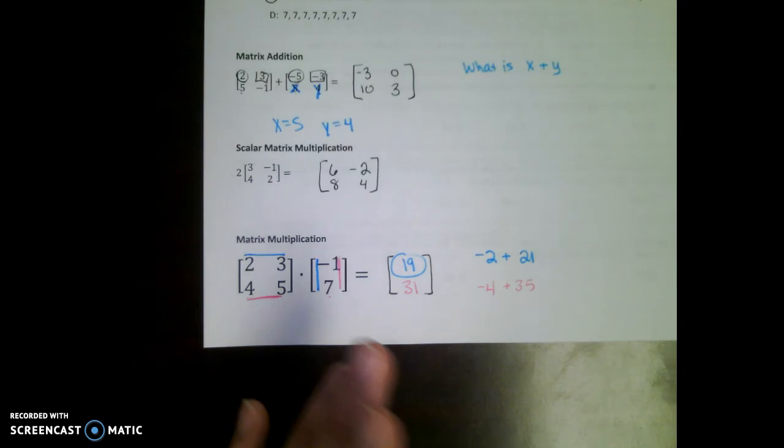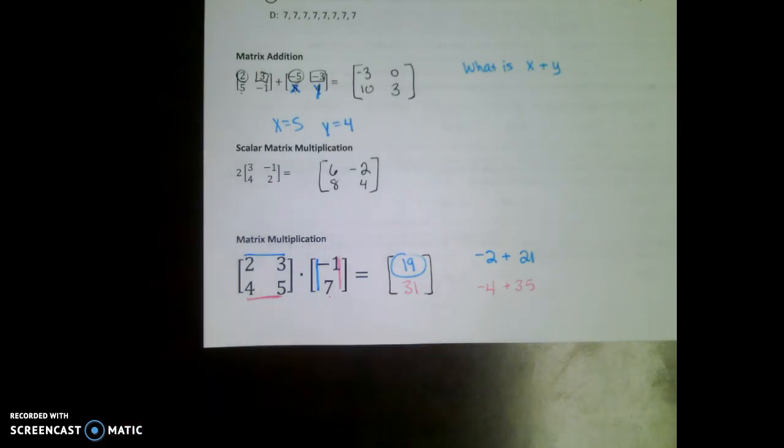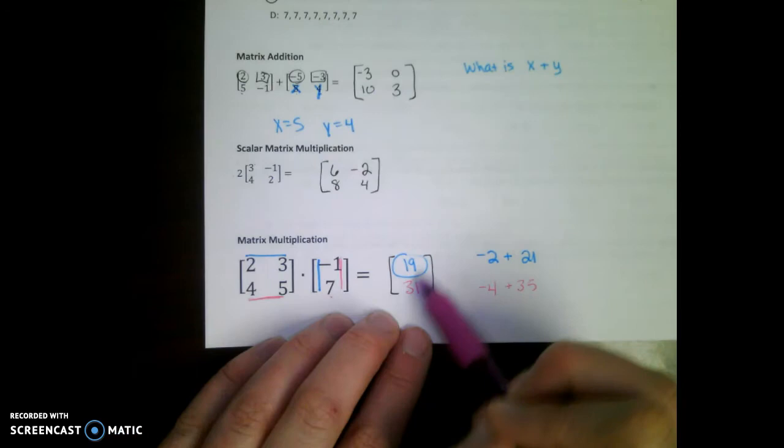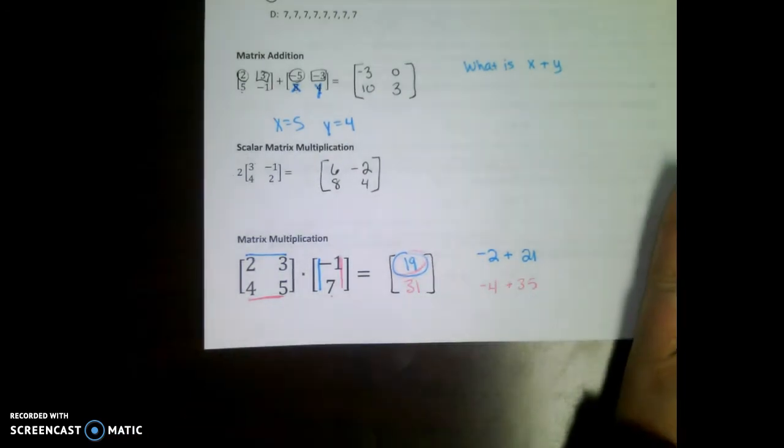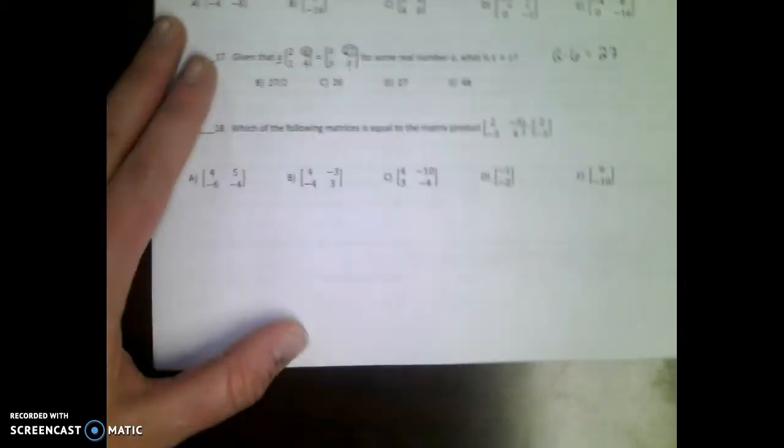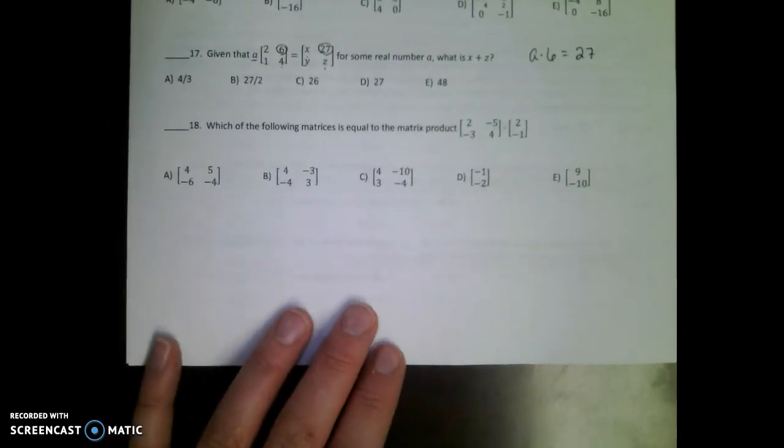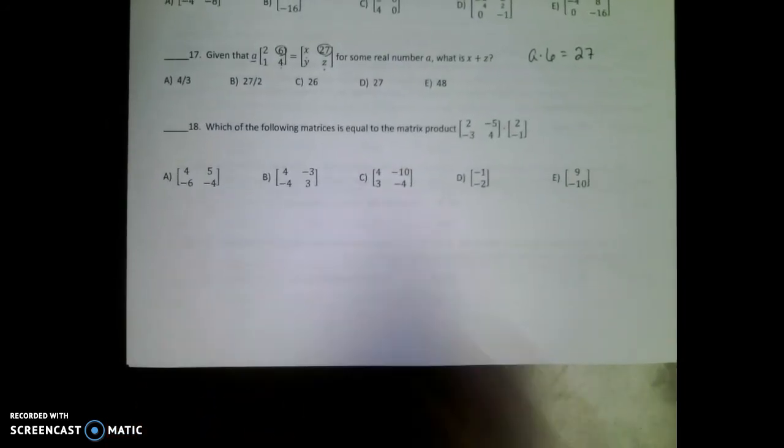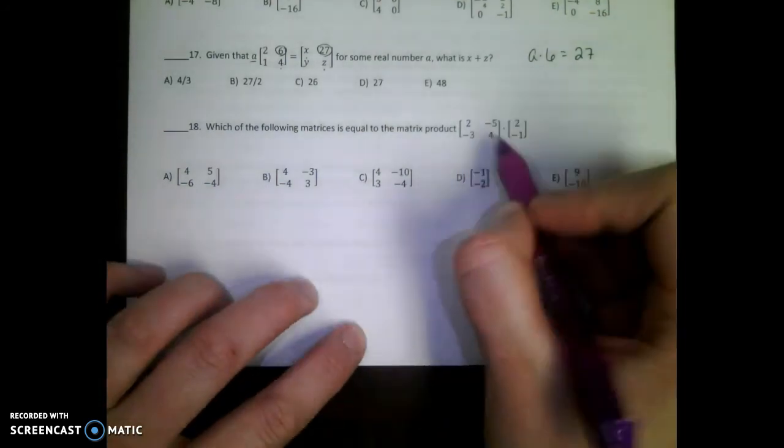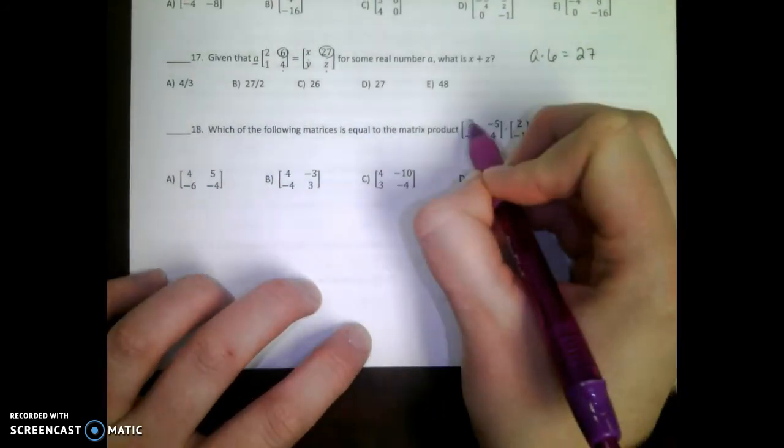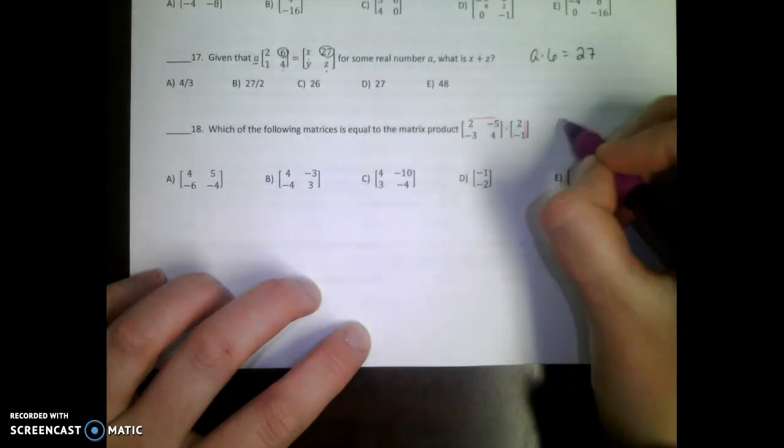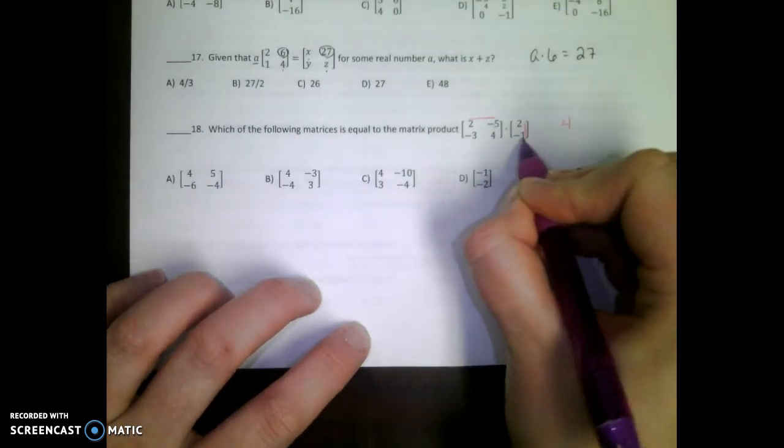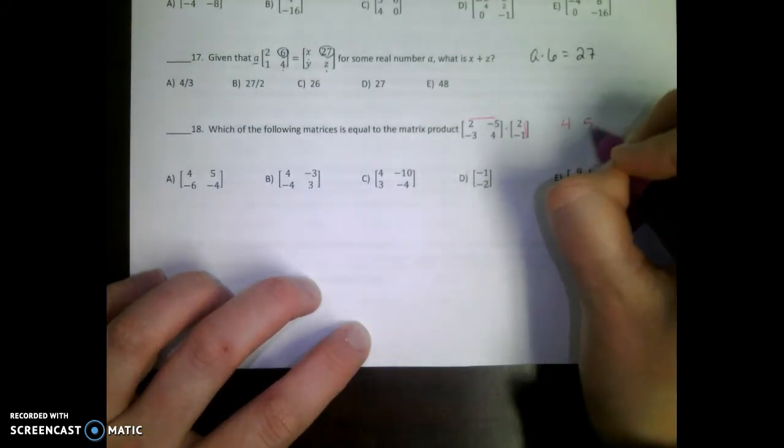Okay, so ACT trick. Do you have to do the whole problem? No. If you know how to get this first number, you probably have enough information to answer the problem. So turn to the very back of the packet and let's try the last problem. Which of the following matrices is equal to the matrix product that thing times that thing?